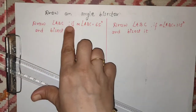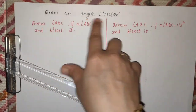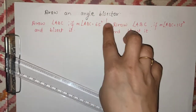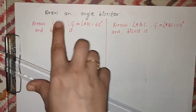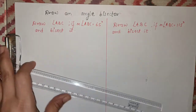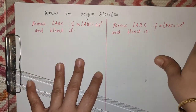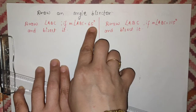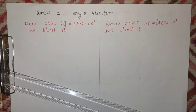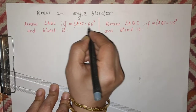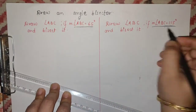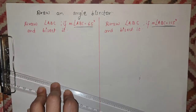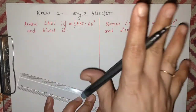Now this is the angle bisector. The meaning of angle bisector is that it divides an angle into two equal parts — that is called bisector. I have written two questions here because students know the method, but the mistake they make is they don't notice the type of angle. This one is acute and this one is obtuse. Many students draw the obtuse angle as acute — that is a big mistake. So be very careful about the type of angle.